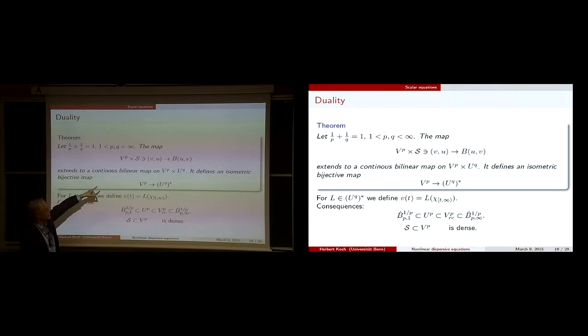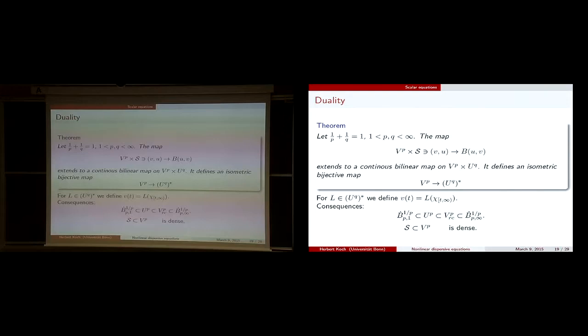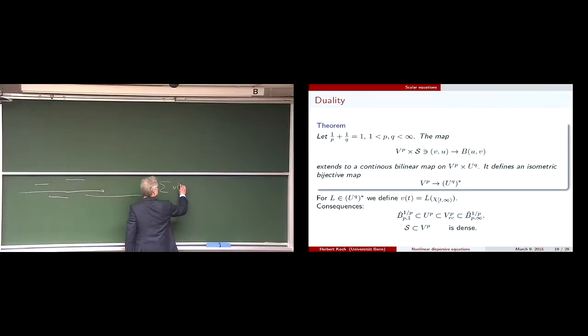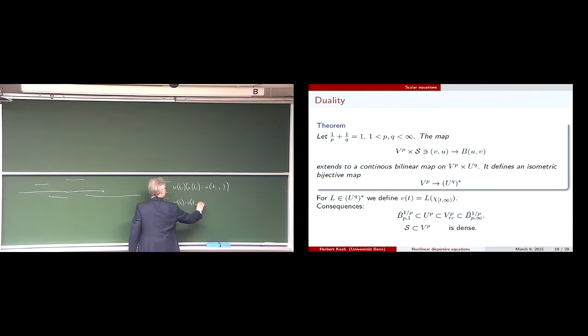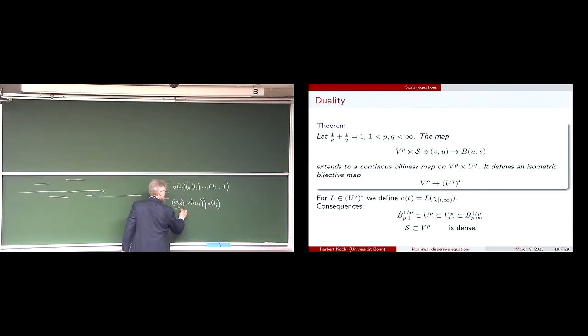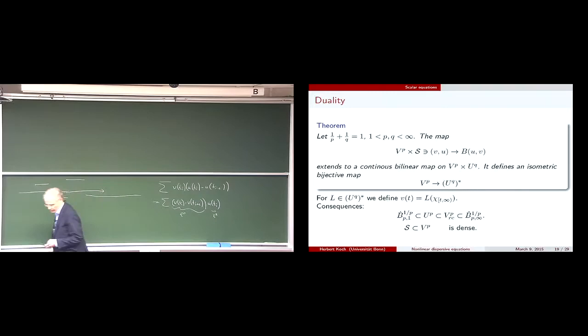Similarly, to prove that this bilinear map is well defined, it suffices to check on an atom. On an atom you get a finite sum — the sum of V(t_i) times (U(t_i) minus U(t_{i-1})). You pay attention to what happens at infinity. Then you estimate that in L^p and in L^q: if you have an atom, the L^q piece gives one, and you get this bound.